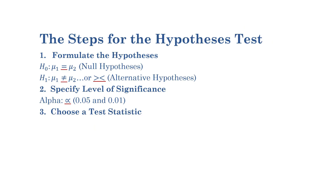Common test statistics include the z-score, t-score, chi-square, f-statistics, and others. Number four: criteria for rejection. Based on the chosen significance level and the distribution of the test statistics under the null hypothesis, determine the critical value beyond which the null hypothesis will be rejected.